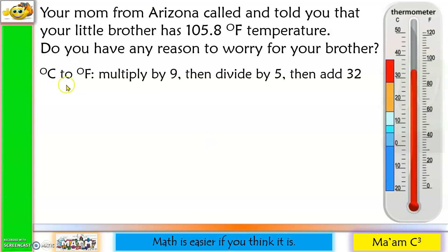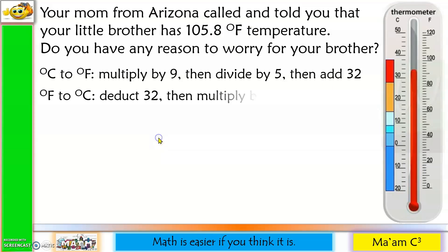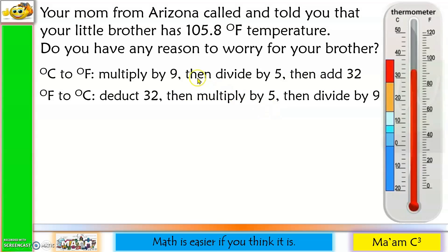Given the degrees Celsius, we multiply it by 9, then divide it by 5, and then add 32. But this time, we are going to reverse the process because the given is in Fahrenheit. So from degrees Fahrenheit to Celsius, we deduct 32 — because that is the inverse of adding 32 — then multiply it by 5, because that is the inverse of dividing by 5, and then divide by 9, because that is the inverse of multiplying by 9. So let's convert.